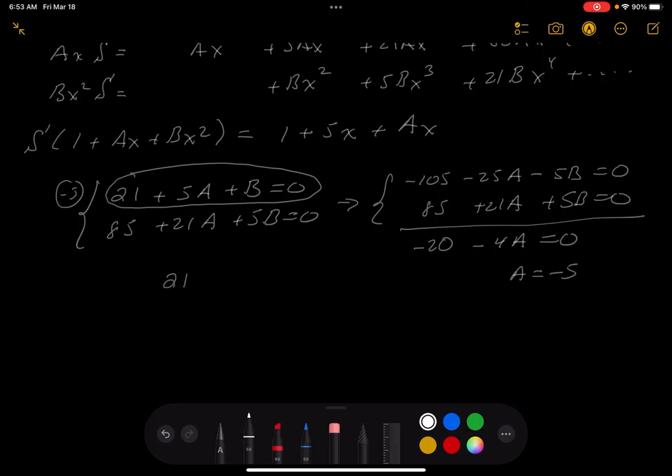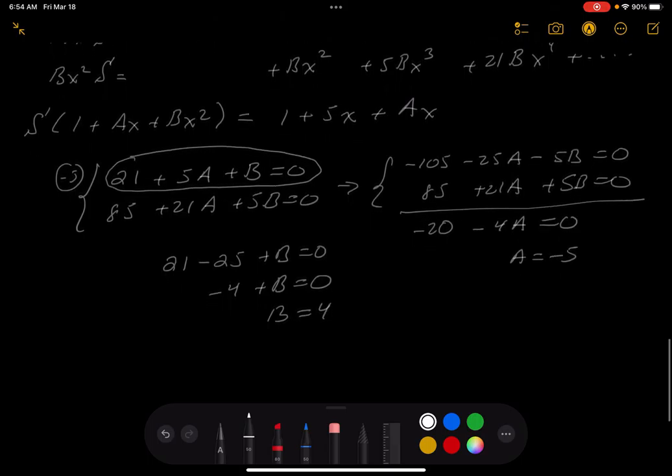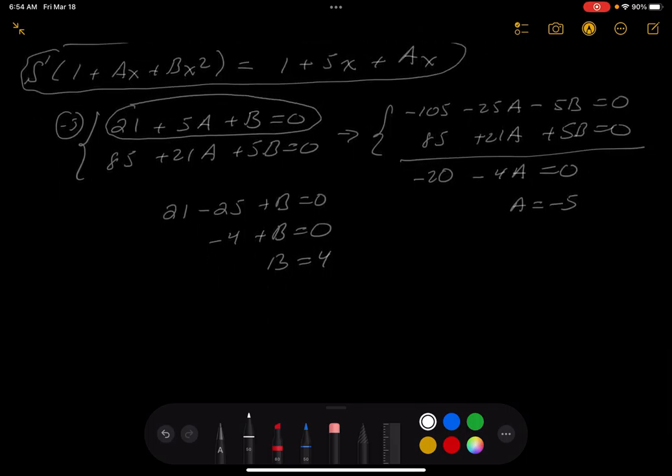All right, what am I going to do now? Now, I've got to get the B. So I'm going to use this equation here to try to get the B. So you get 21 minus 25, because A is minus 5, plus B equals 0. So what do you get there? You would get minus 4 plus B equals 0. So B has to be 4. This is important. And I'm going to take this now and write it down.